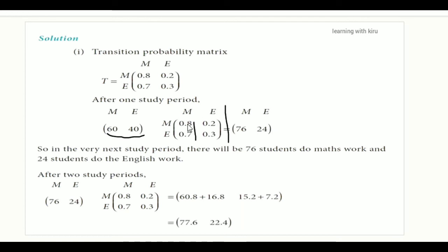Computing: 60 × 0.8 plus 40 × 0.7 equals 76. The complement: 60 × 0.2 plus 40 × 0.3 equals 12 plus 12 equals 24. So 76 students pass in Maths and 24 students pass in English. For the next period, we multiply the matrix again: 76 × 0.8 plus 24 × 0.7, and 76 × 0.2 plus 24 × 0.3, giving approximately 77.6 and 22.4.